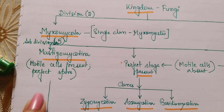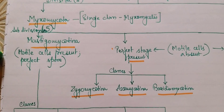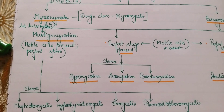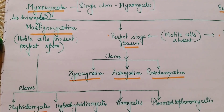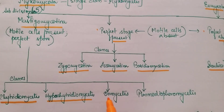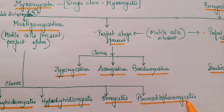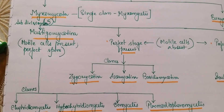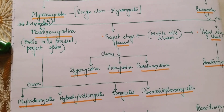Coming back to the group where motile cells are present — Mastigomycotina — that group is divided into four classes: Chytridiomycetes, Hypochytridiomycetes, Oomycetes, and Plasmodiophoromycetes. Please make a note of the spellings and be very careful while drawing this flow chart in your exam.